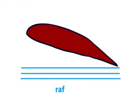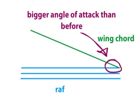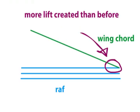where there is a larger angle between the relative air flow and the wing chord. This will produce more lift than a smaller angle of attack.